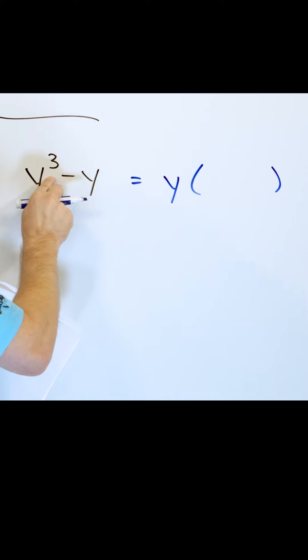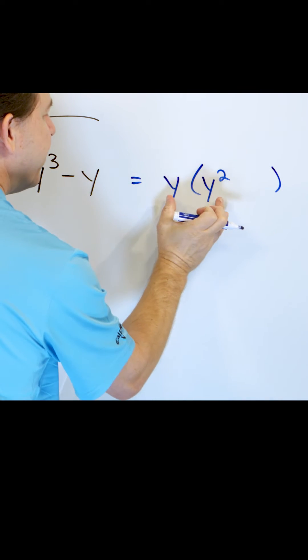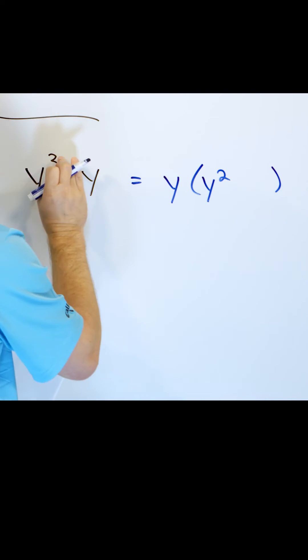Now y times what is y cubed? Well, inside here has to be y squared because when I multiply, remember, same base, I add the exponents, two plus one is three.